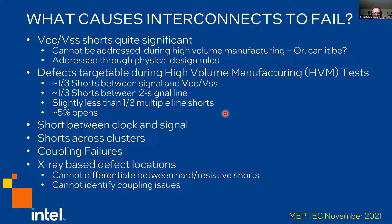When we get to two-line signal-to-signal shorts, they are also quite significant — almost as significant as a short to VCC and ground — and about a third of the defects fall in that category. There are also many multiple-line shorts; they are not as prevalent as two-line shots, but still quite significant. Finally, opens tend to be very small in number, about 5%. So this is really the kind of defects that we see — we are here talking about signal to signal.